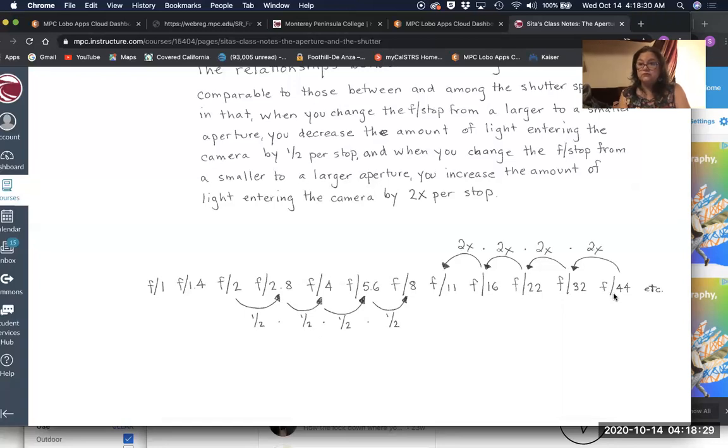In the opposite direction, when we change the aperture from a smaller to a larger aperture, we doubled the amount of light per stop. So when I change the aperture from f44 to f32, I doubled the amount of light entering the camera. From f32 to f22, I doubled the amount of light entering the camera, and so on.